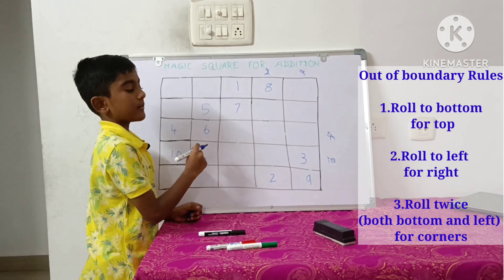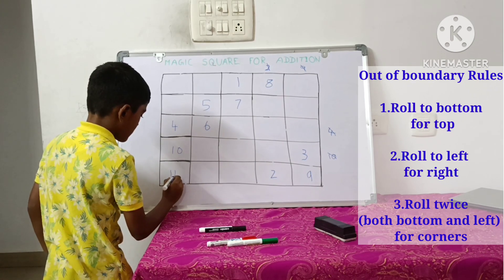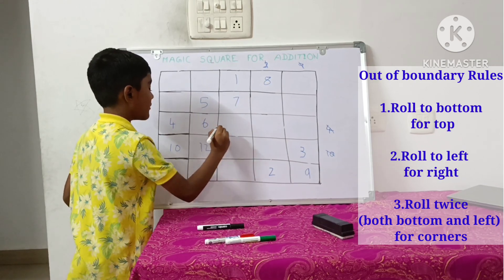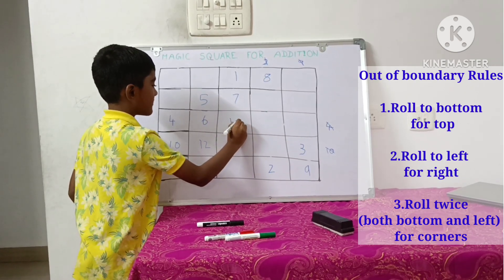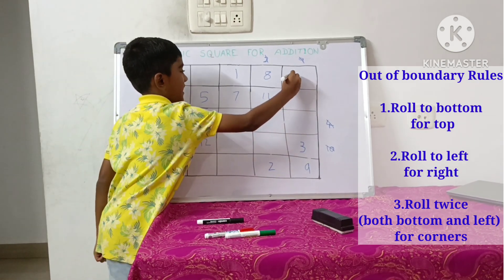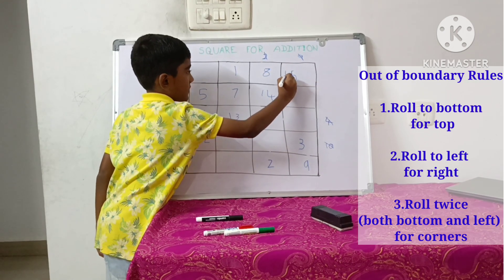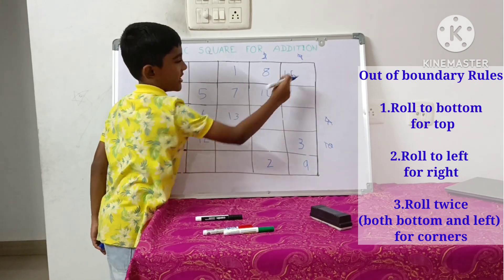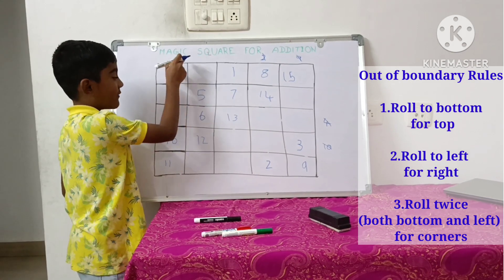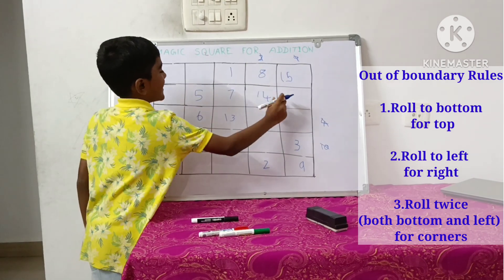Already filled — bring back, let's keep it down. Move diagonally, move diagonally, move diagonally. Out of boundary — it is a corner. Let's roll to the left. Out of boundary — let's roll to the bottom. Already filled — bring back, keep it down.